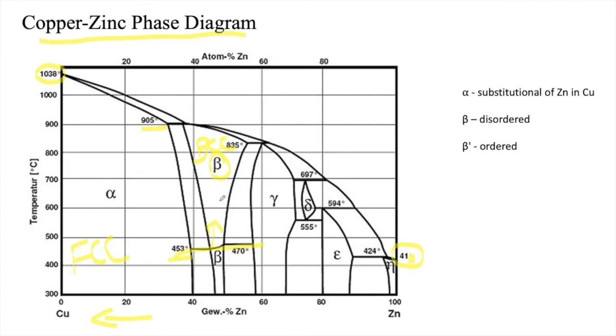The zinc takes the defined position such as the corner of the BCC or the tetrahedral position. When it passes below 450 degrees Celsius, wherever it could take a place in the BCC beta, it forms a disordered structure.